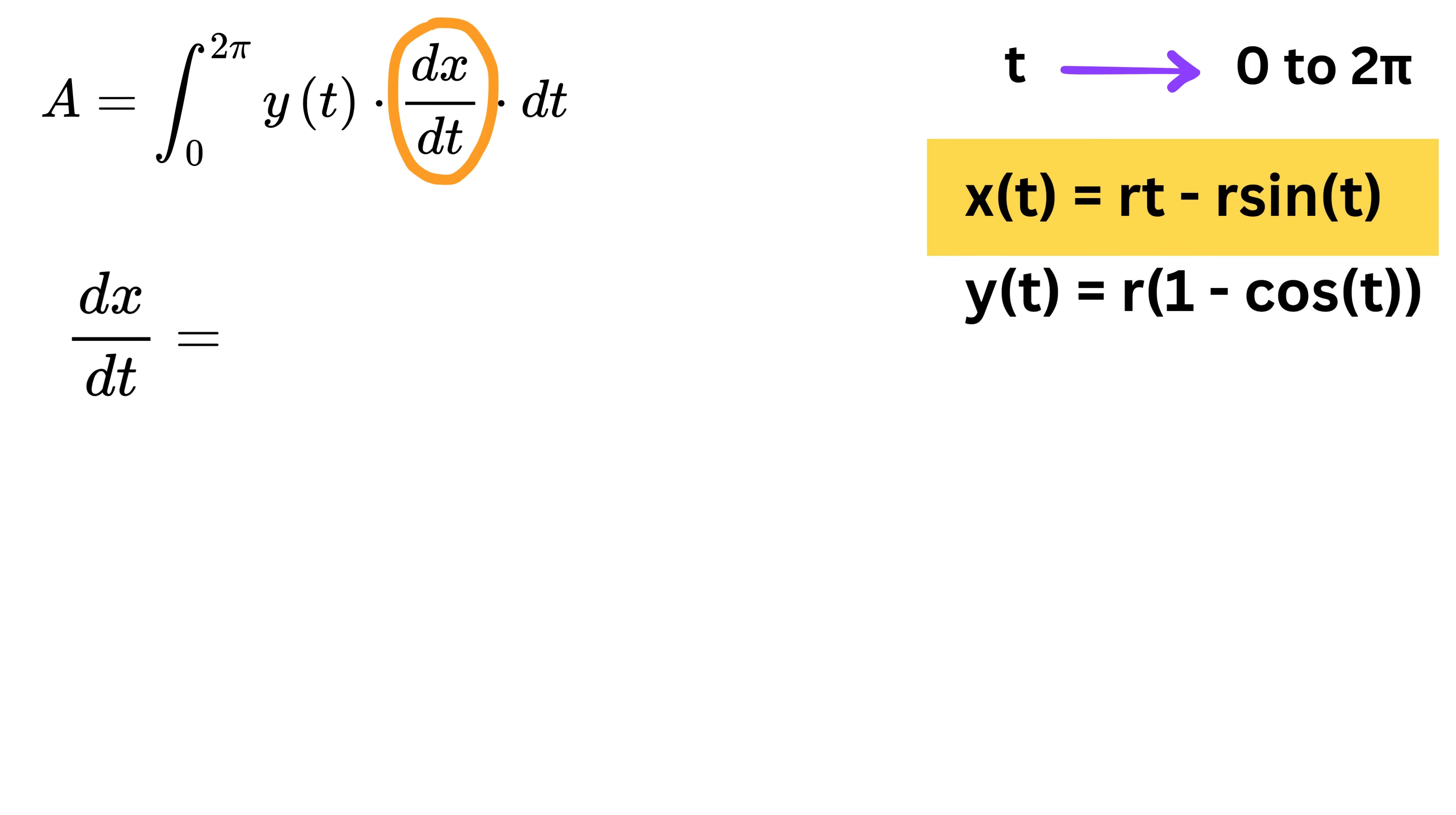Differentiate x with respect to T. The derivative of R times T is R, and the derivative of minus R times sine of T is minus R times cosine of T. So the derivative of x with respect to T equals R times 1 minus cosine of T.